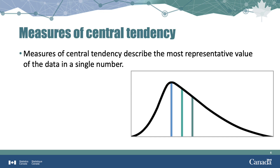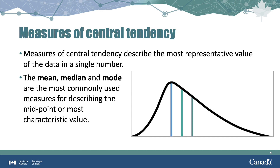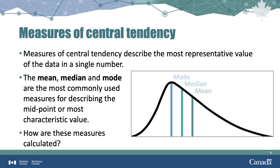What exactly does central tendency mean? Measures of central tendency describe the most representative value of the data in a single number. This is also called the balance point of a dataset, and is typically represented as the mean, the median, and the mode. Let's see how these three measures are calculated.